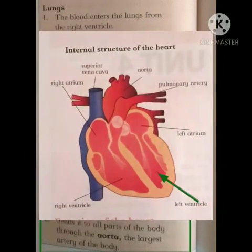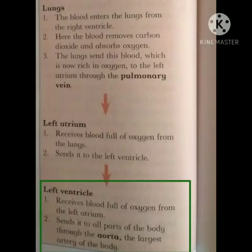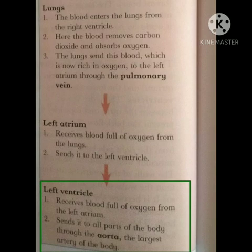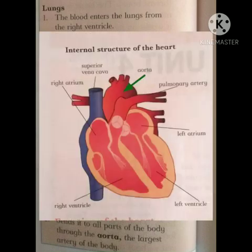Left ventricle receives blood full of oxygen from the left atrium and sends it to all parts of the body through the aorta, the largest artery of the body. Left ventricle left atrium سے blood receive کرتا ہے جو کہ full of oxygen ہوتا ہے. Left ventricle اس blood کو aorta کے ذریعے body کے all parts تک پہنچاتا ہے. Aorta body کی largest artery ہے.